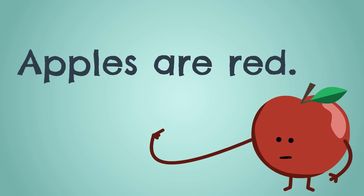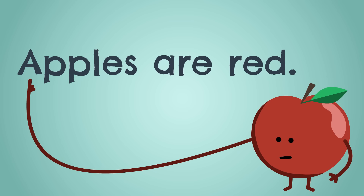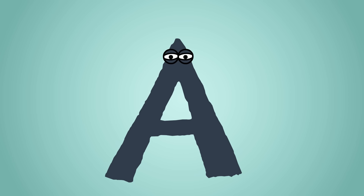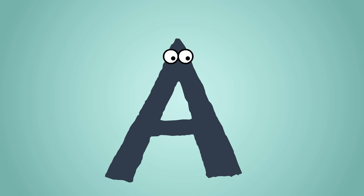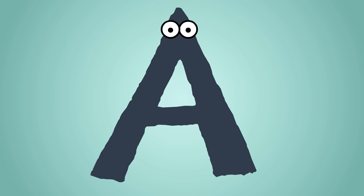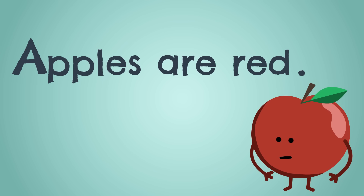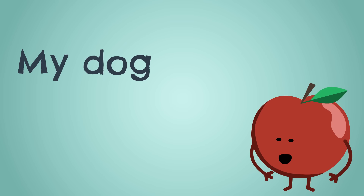A sentence begins with a capital letter. A capital letter is a letter that's big — a capital letter is not a small letter, a capital letter is big. A sentence ends with a period, or an exclamation mark, or a question mark. A sentence always ends with a period, or an exclamation mark, or a question mark.